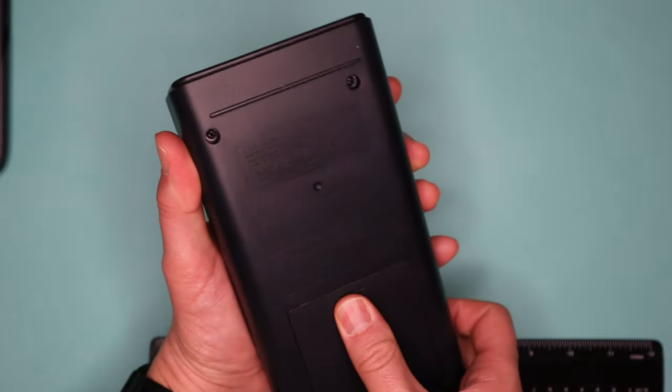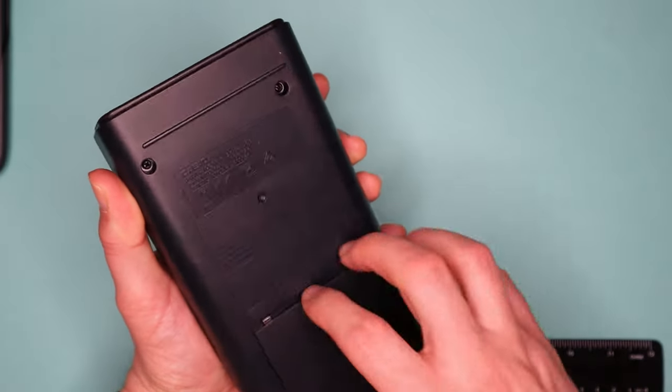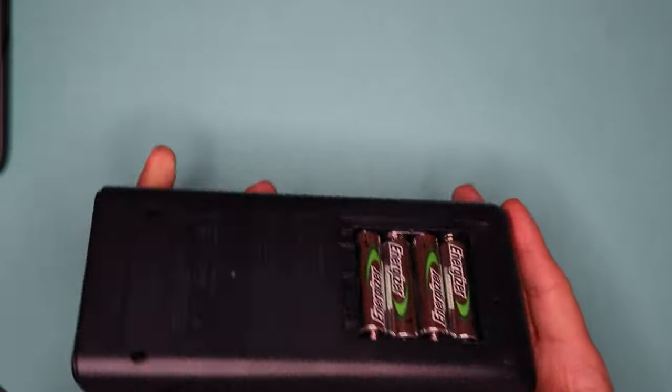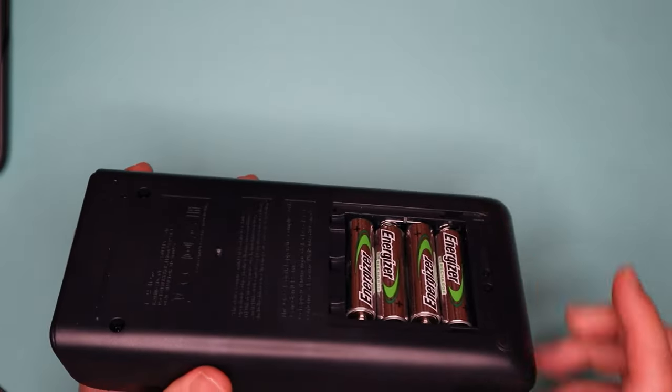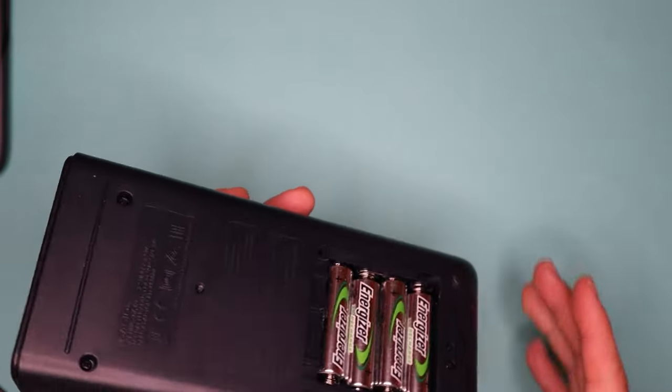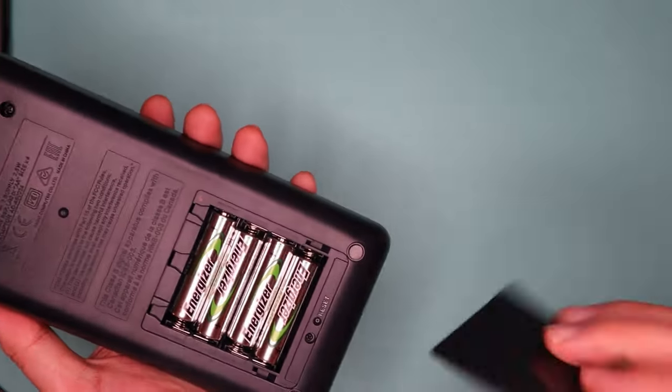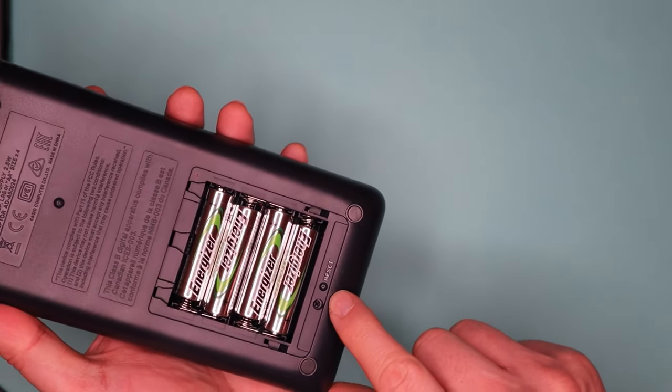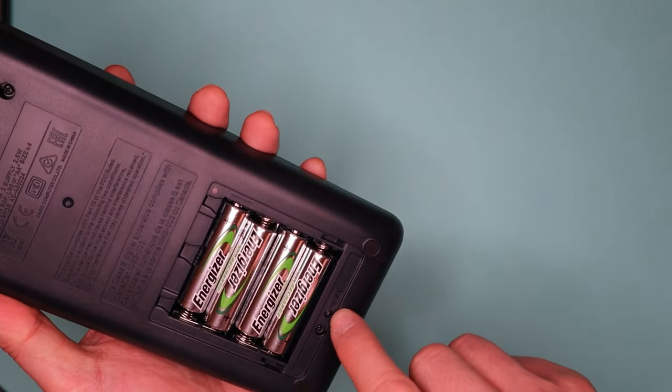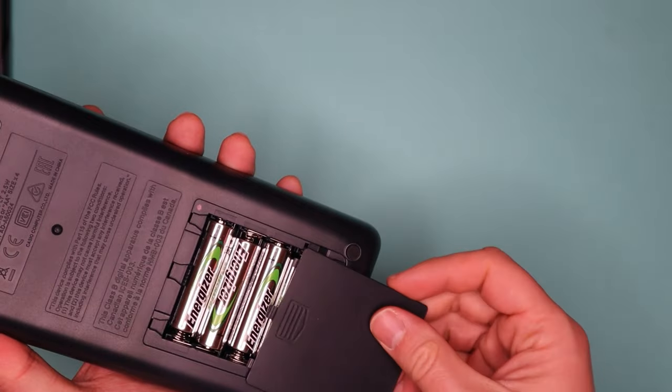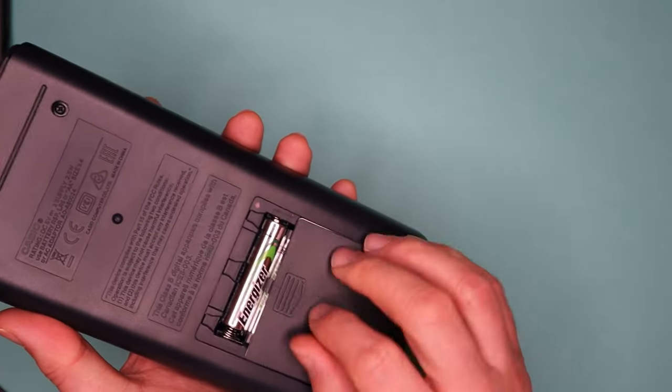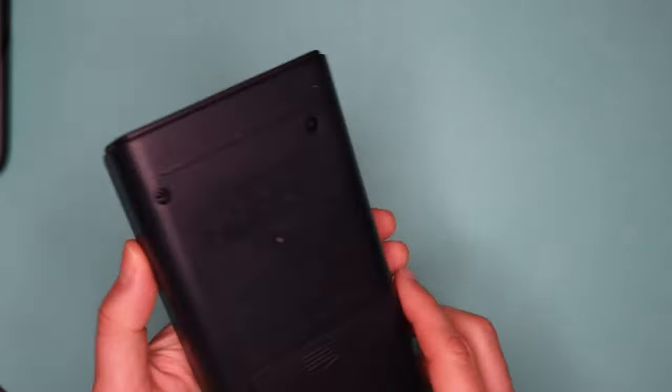There's a battery compartment. It takes four double A batteries. I've got some rechargeable batteries in there. It'll be interesting to see how long they last. Under the cover, there's also a reset button there. I'll use a paper clip or maybe a sharpened pencil just to reset the calculator.